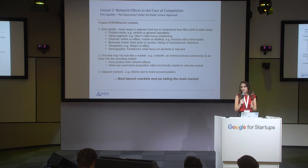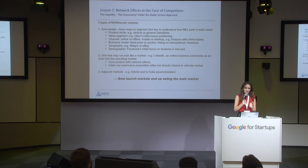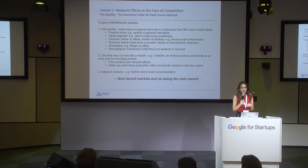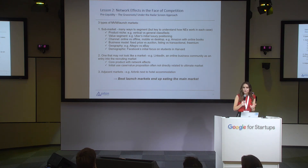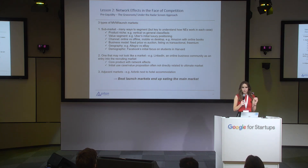There are roughly three types of minimum viable markets. First, you can go after a sub-market — there are many ways to segment. For example: product niche or vertical versus general classifieds; value segment, like Uber's luxury segmentation initially; demographic, like Facebook's initial focus on Harvard students only; or geography, like Allegro versus eBay.